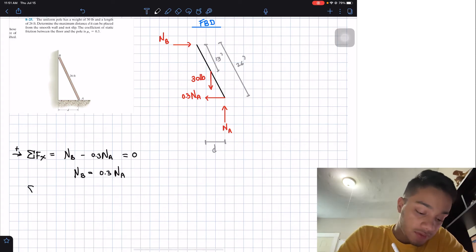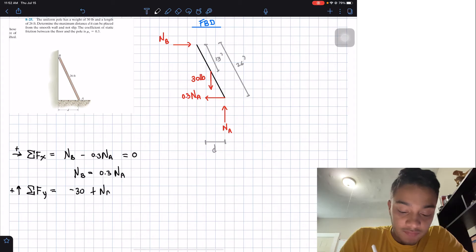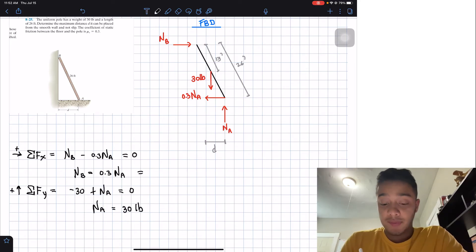Then what we can do is the summation of forces in the y direction. Assuming that going up is positive, what do we have? Well, we got negative 30 pounds for my weight, then I have positive NA. And all this should be equal to 0. So from here, we can say that NA is equal to 30 pounds. Now that we know NA, we can plug it in NB. So we got that 0.3 times 30 will be equal to 9 pounds. So we got NB and NA.